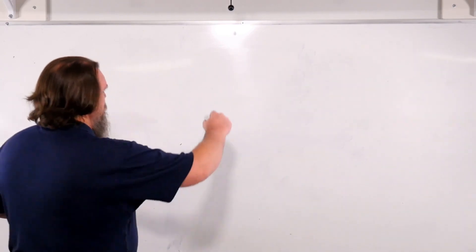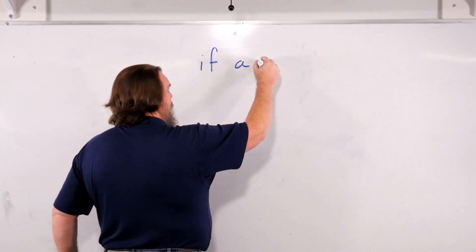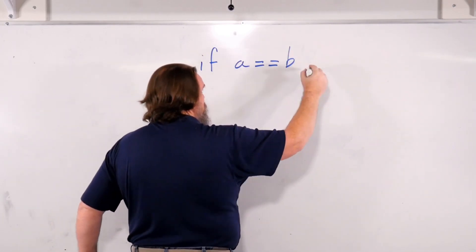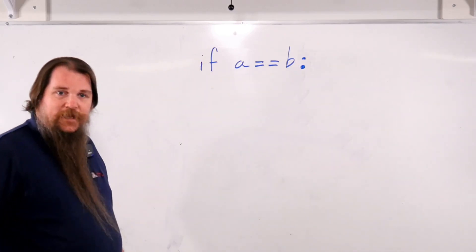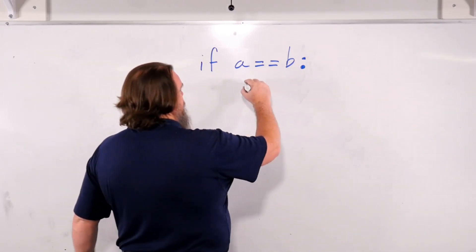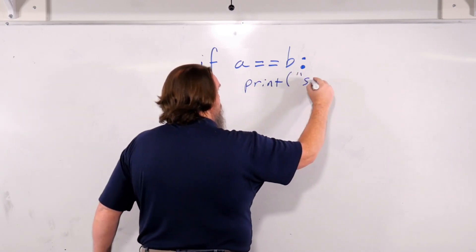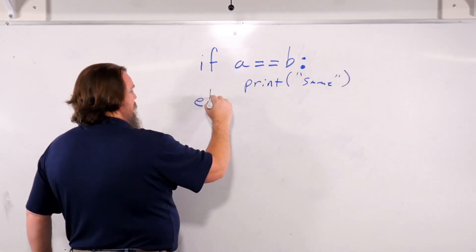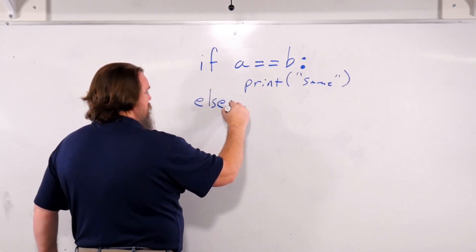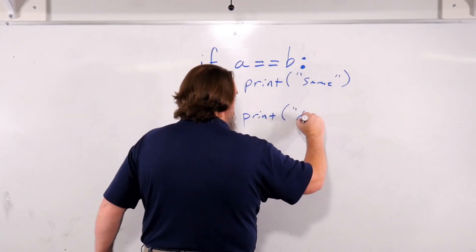So if you want to have an if statement, you say if A equals B, put a colon at the end to mark that we're at the beginning of a block. And now you can say print same. Now we can have an else here with another colon. And we can say print different.